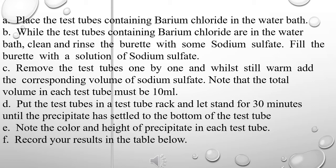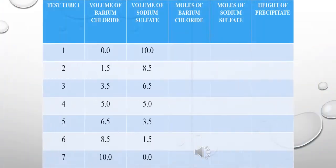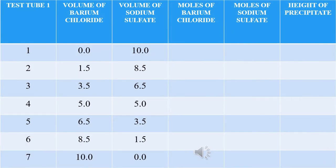E: Note the color and height of precipitate in each test tube. F: Record your results in the table below. In this table, calculate the moles of Barium Chloride and moles of Sodium Sulfate independently. Additionally, indicate the height of the precipitate in millimeters.